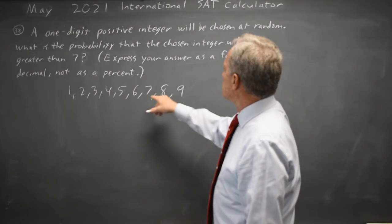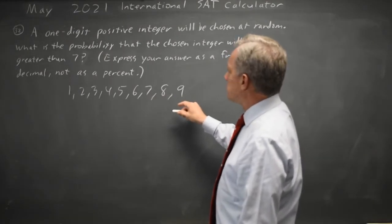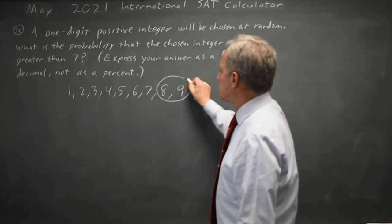A one-digit positive integer is chosen at random. What's the probability that the chosen integer will be greater than 7? That's 8 or 9.